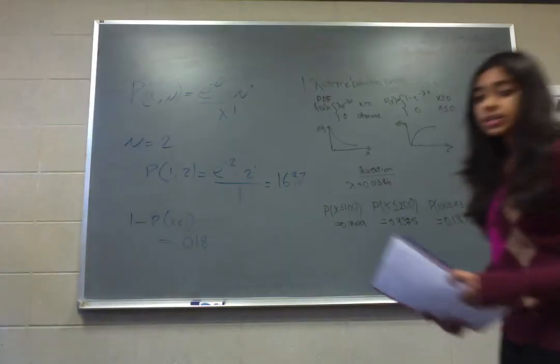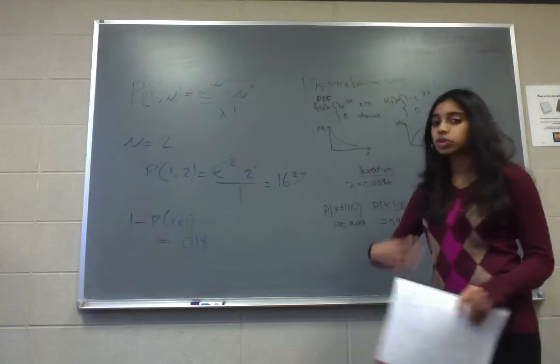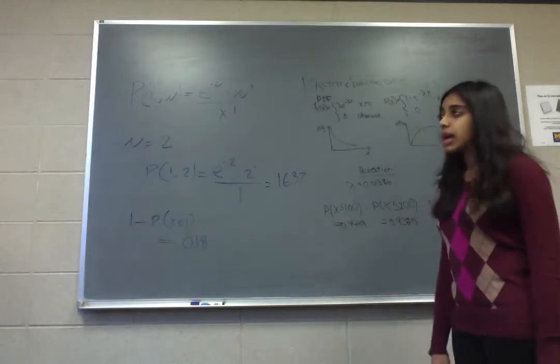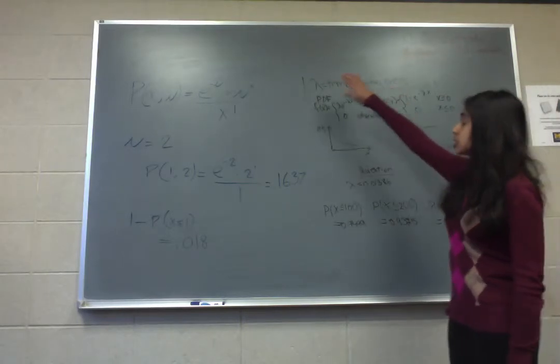Now to move on to exponential distribution. The exponential distribution is similar to the Poisson distribution, but instead of looking at the number of events that happen in a time period, you're looking at the time between events, which is lambda.